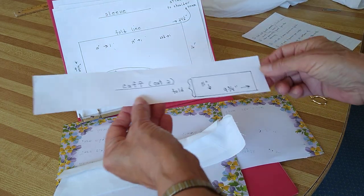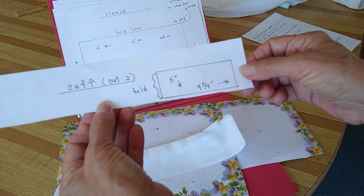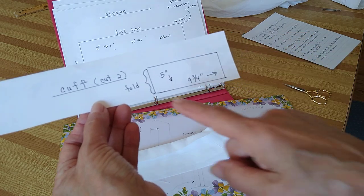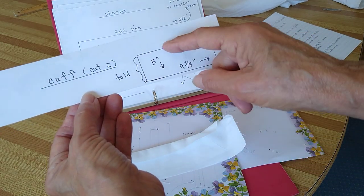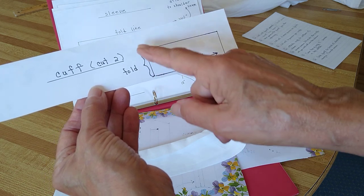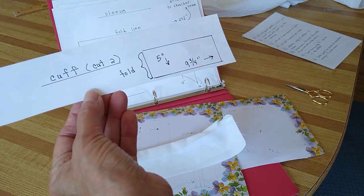Now for the sleeves we're going to be cutting out a cuff nine and three quarter inches long by five inches in depth and we're going to put it on the fold and we're going to cut out two of these.